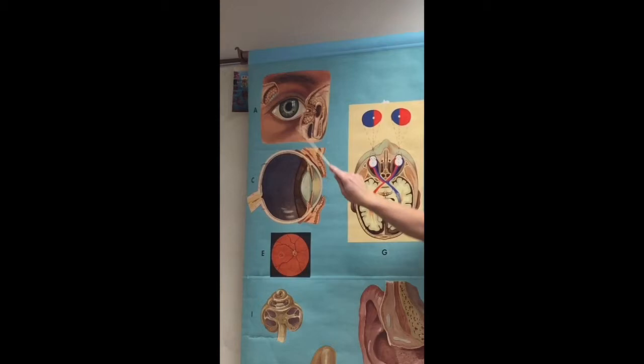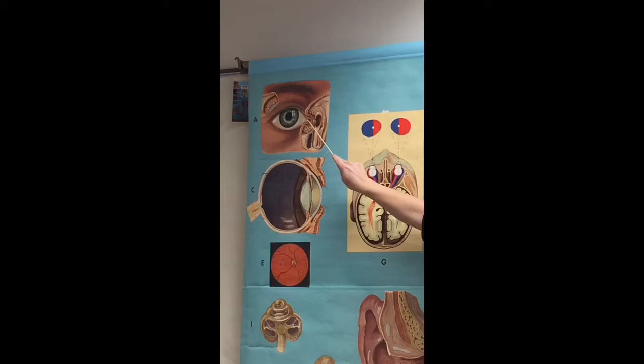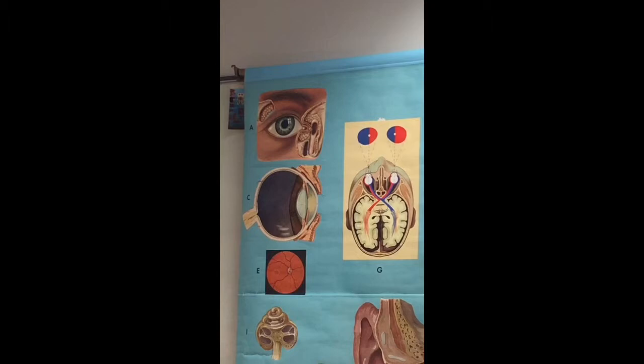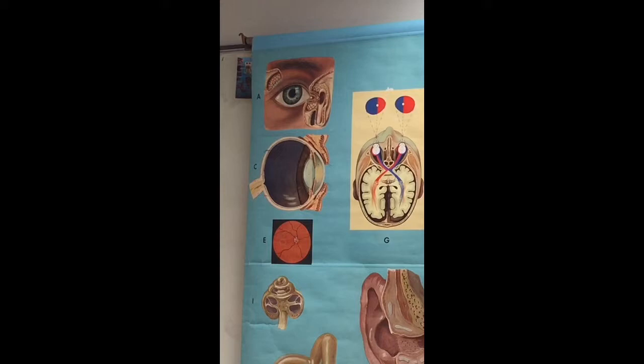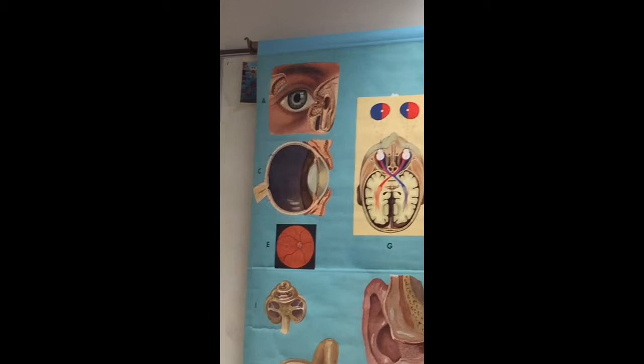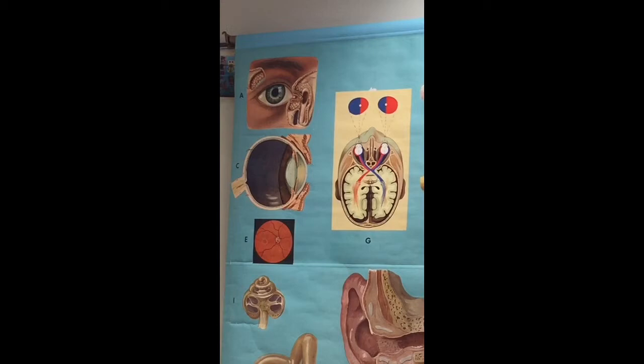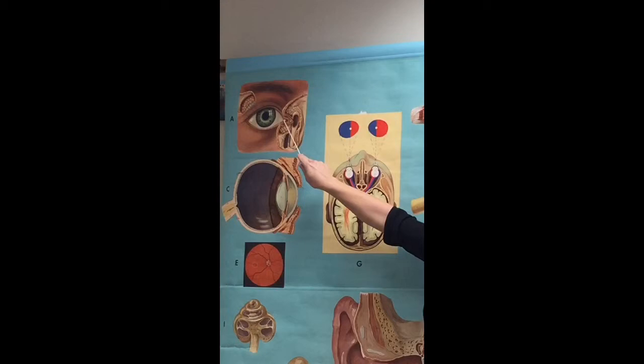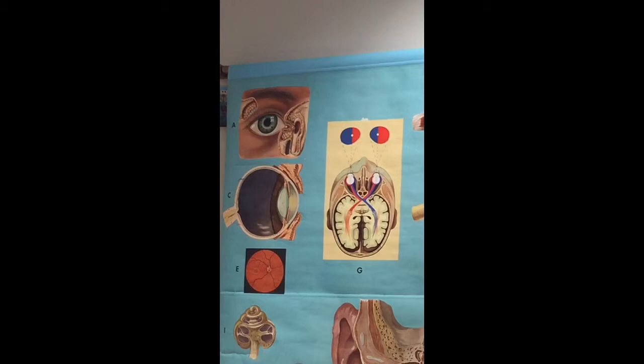If you look at your medial commissure, you're going to see a pink fleshy body there - that's what we call the caruncle. Does anyone know what the function of your caruncle is? What accumulates there? Eye goobers, junk in your eye. That stuff that accumulates in that medial commissure, that's what the caruncle produces. It's producing a substance to help keep that eye clean. It's producing the substance to clean the eyeball.